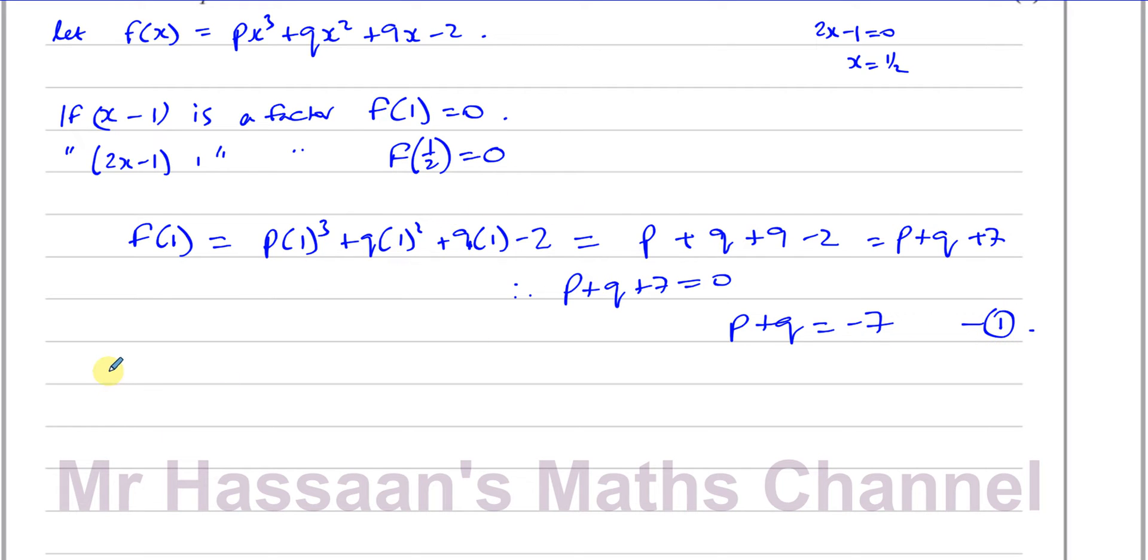The other one is from when we put f = 1/2 into the same expression. So you're going to have p times (1/2)³ + q times (1/2)² + 9 times 1/2 - 2, which will give us 1/8 p + 1/4 q + 9/2 - 2. And we know all of this therefore is going to equal 0. So we can say 1/8 p + 1/4 q + 9/2 - 2, that's going to be 9/2 - 4/2, that's going to be + 5/2 = 0.